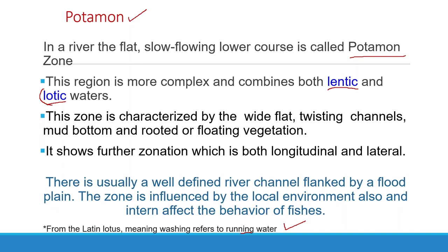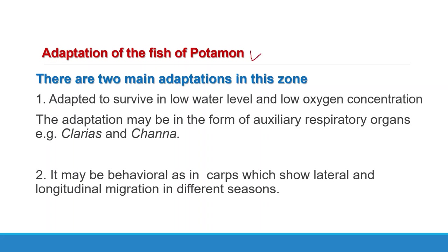The Potamon is environmentally more complex than the Rhithron and combines both lentic and lotic waters. Lotic refers to running water and lentic means still water, so in this region both running and still waters may be present. The plain contains many types of water bodies, some of which retain water throughout the inter-flood period. Because of silt deposition, features show a succession from open lagoon through vegetation-lined pools to densely vegetated swamps or dry land. In floodplain water bodies, dissolved oxygen concentration falls in the dry season.